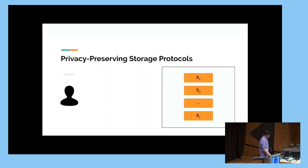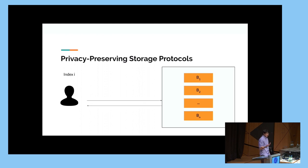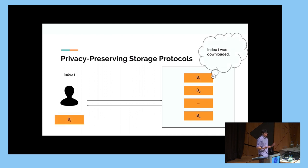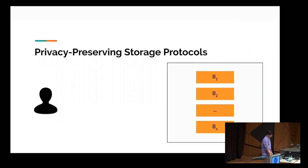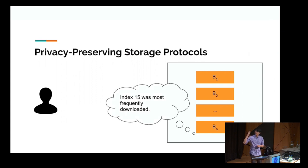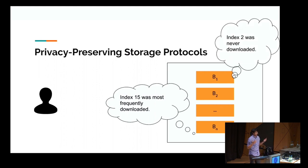For example, let's suppose the client wants index i and it naively goes and accesses block i. The problem is that the adversarial server can see this and say, oh, index i was downloaded. Maybe for one access it's fine, but over time the server gets statistics — things like index 15 was the most frequently downloaded, or index 2 was never downloaded. It's been shown in the literature that these things can be actually pretty damaging and compromising towards privacy.